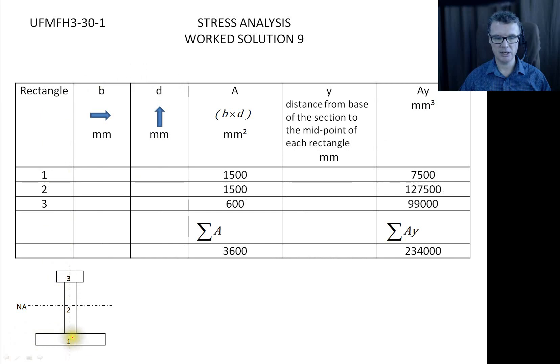So this is the table that we want you to use. We label up each rectangle, so 1, 2, and 3. We find its breadth and fill in the value here, we find its depth, fill in the value here, take the two values, multiply them together, find the area, then find the centroid, then put it in here, and then take area times centroid and find the Ay value. These have been partially filled in. This table, so that's our first rectangle, 150 depth of 10.